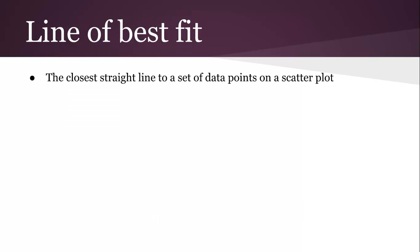The line of best fit is the closest straight line to a set of data points on a scatter plot. In grade 9, we would talk about drawing that by hand, like making sure that we've got as many points above the line as below, and as many points on the line as possible.